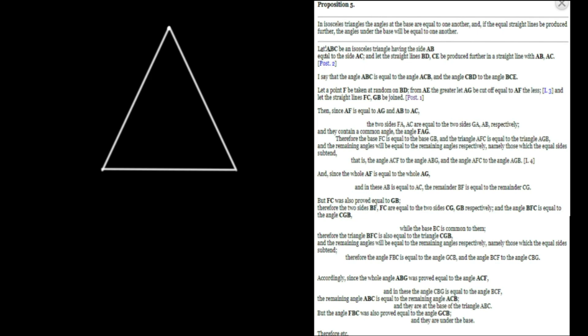Let's check out the givens. Let ABC be an isosceles triangle having the side AB equal to the side AC. The two equal sides are AB and AC. An isosceles triangle is defined as a triangle in which exactly two sides are equal, so AB and AC are going to be the equal sides in this triangle.